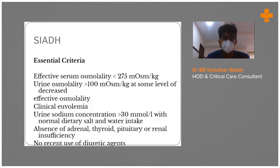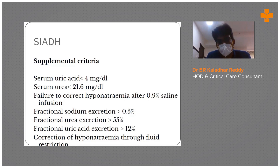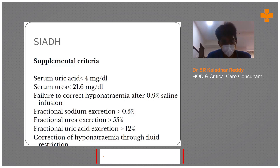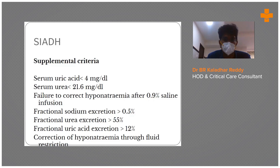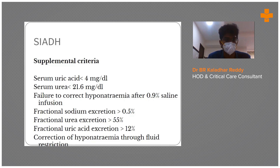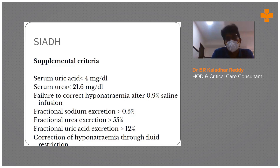The essential criteria for SIADH are: serum osmolality less than 275 (hypotonic), urine osmolality more than 100, clinical euvolemia, urine sodium more than 30, and absence of adrenal, thyroid, pituitary, or renal insufficiency, with no recent diuretic use. Note: 0.9% saline infusion will worsen SIADH. The treatment is fluid restriction — restricting fluids corrects hyponatremia in SIADH. To confirm SIADH, restrict fluids and repeat sodium; if it improves, the diagnosis is correct.